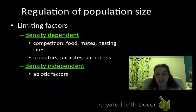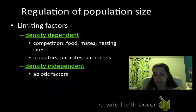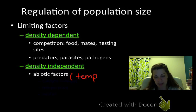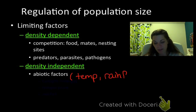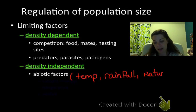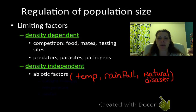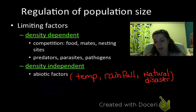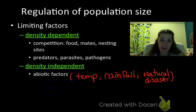Density-independent factors tend to be things that are abiotic. The examples here are things like temperature, rainfall, and natural disasters. Those are the ones we'll talk about the most — temperature, climate in general, rainfall, and natural disaster. So, those are our limiting factors.